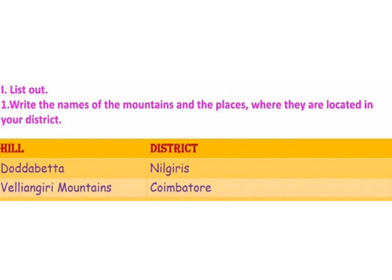First one: Thotta Betta — T-O-D-D-A-B-E-T-T-A — located in Nilgiri — N-I-L-G-I-R-I-S. Second one: Vilyangiri Hills — V-E-L-L-I-A-N-G-I-R-I — located in Coimbatore — C-O-I-M-B-A-T-O-R-E.